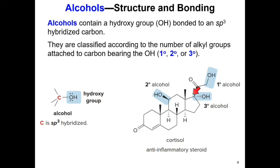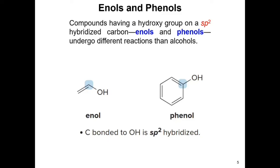There are also organic compounds containing a hydroxy group bonded to sp2 hybridized carbon atoms — these are called enols and phenols. Both undergo different types of chemical reactions compared to alcohols, and those reactions won't be covered in this chapter. An enol is short for alkenol, with a hydroxy group bonded to an alkene, while a phenol has a hydroxy group bonded to a phenyl ring.